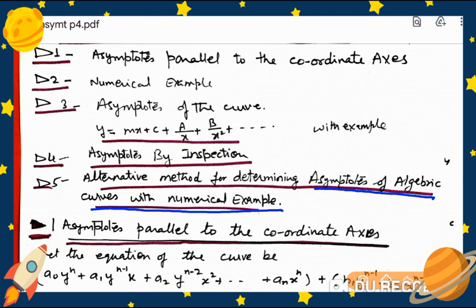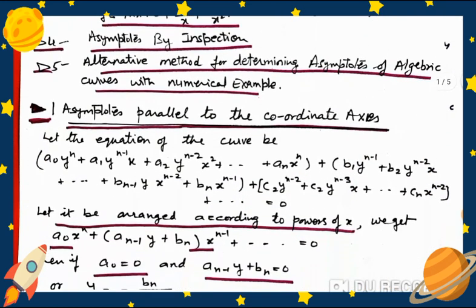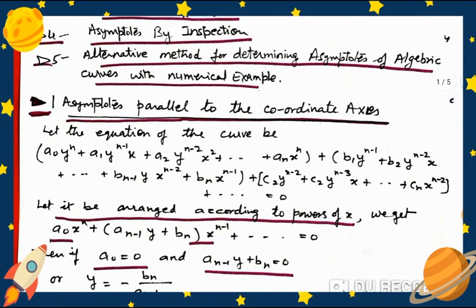Students, the numerical examples I have selected are important — I have taken them from exam papers. Let's start with asymptotes parallel to the coordinate axis. We will discuss how to find asymptotes parallel to our coordinate axes x and y.